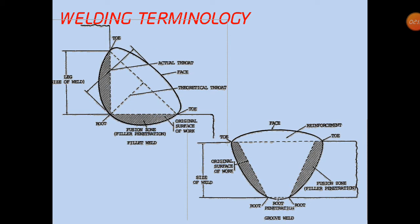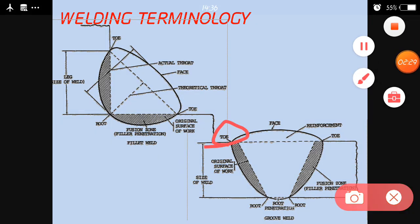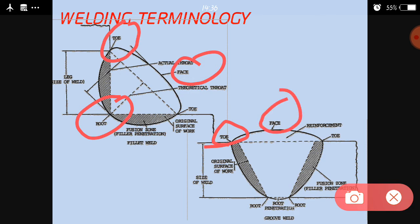This is welding terminology. When we do a welding process, there are three terms which we mostly see in any kind of joint. First one is toe — you can see it here. Second is root. And third one is face. The face is the topmost part of the weld.